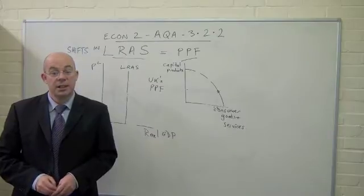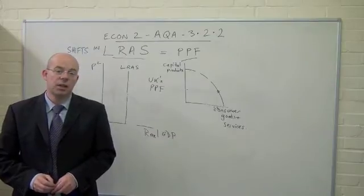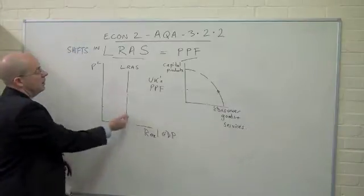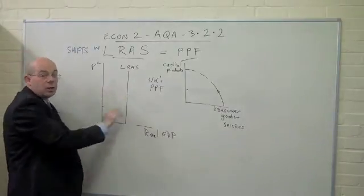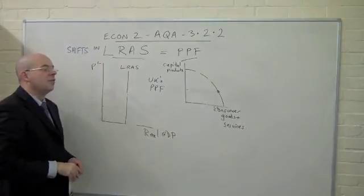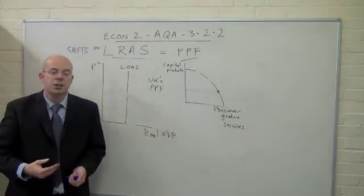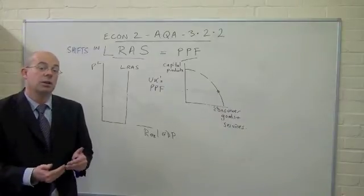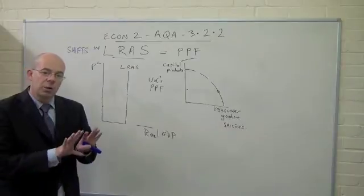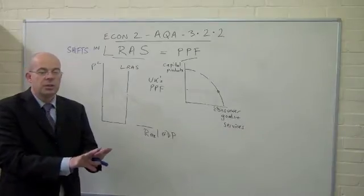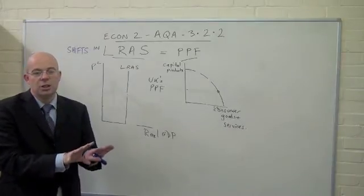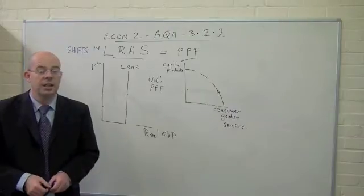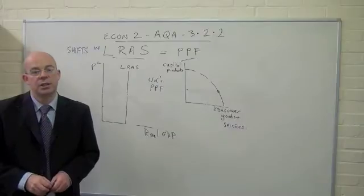What we're going to look at next is the question of shifts in the long-run aggregate supply curve. If you remember, aggregate supply — here we're showing the potential output and we're focusing on the long run. The short run deals with changes in the costs of production, which shifts the short-run aggregate supply curve. Here we're looking to the long term, so we're focusing on changes in the quality and quantity of factors of production.